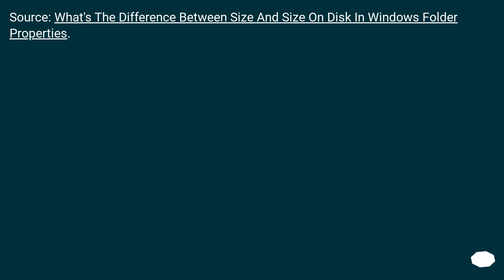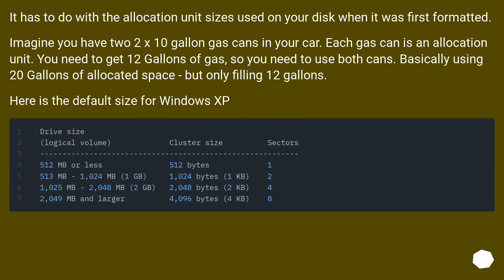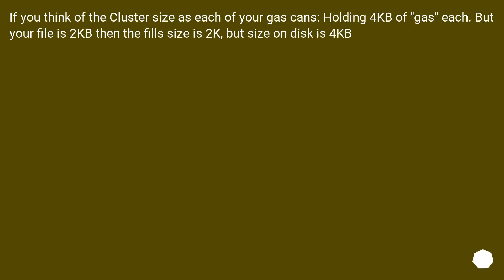What's the difference between size and size on disk in Windows folder properties? It has to do with the allocation unit sizes used on your disk when it was first formatted. Imagine you have two 10-gallon gas cans in your car — each gas can is an allocation unit. You need to get 12 gallons of gas, so you use both cans, using 20 gallons of allocated space but only filling 12 gallons. For example, if the cluster size is 4 kilobytes per cluster and your file is 2 kilobytes, then the file size is 2K but the size on disk is 4 kilobytes.